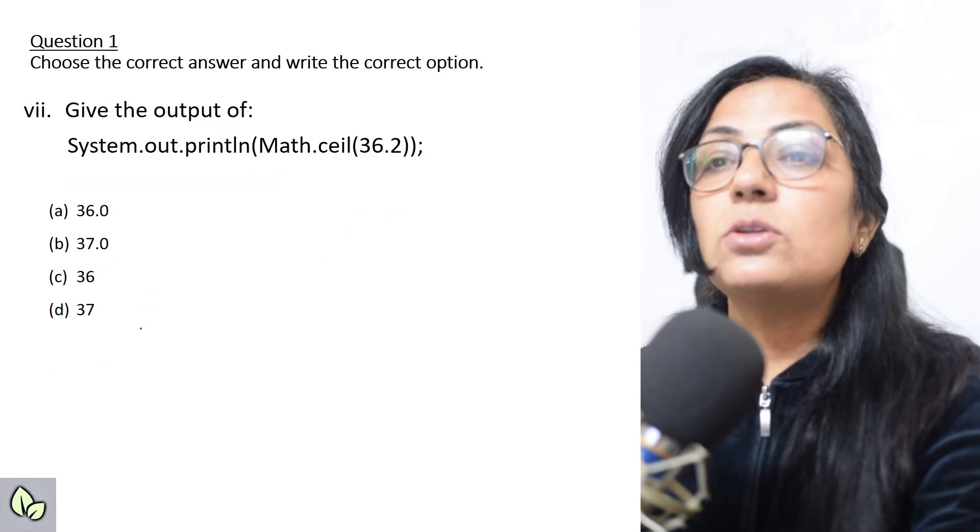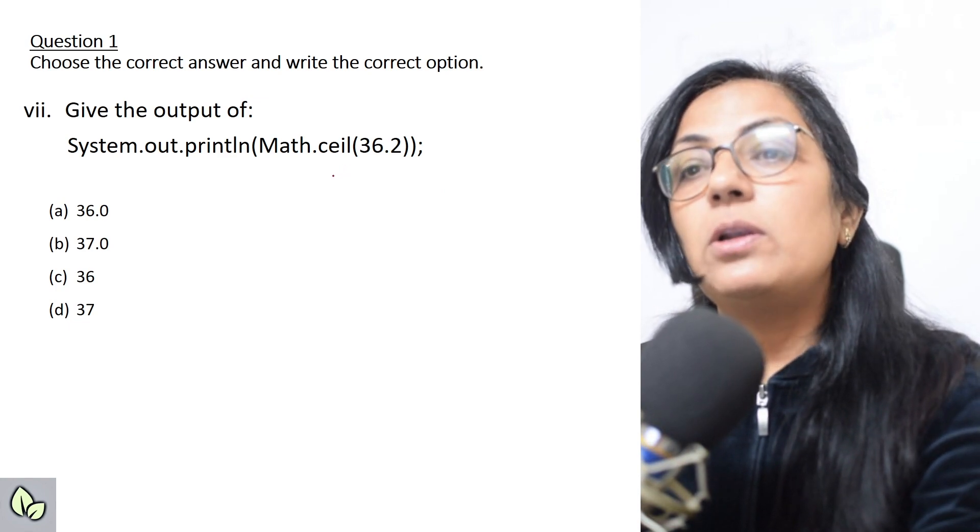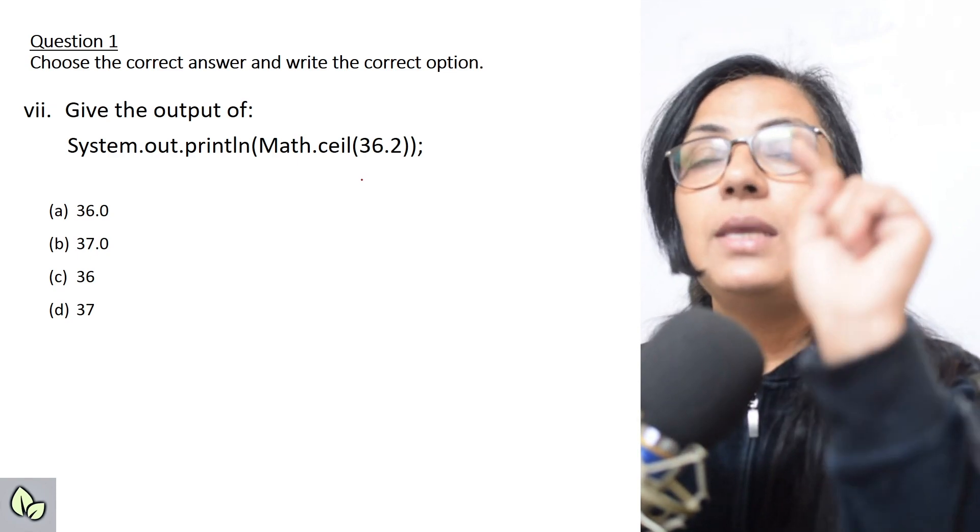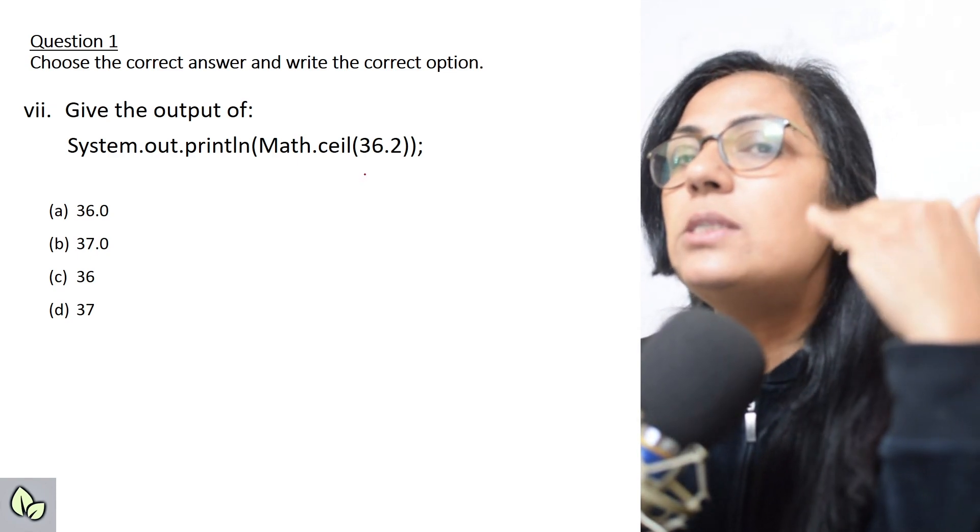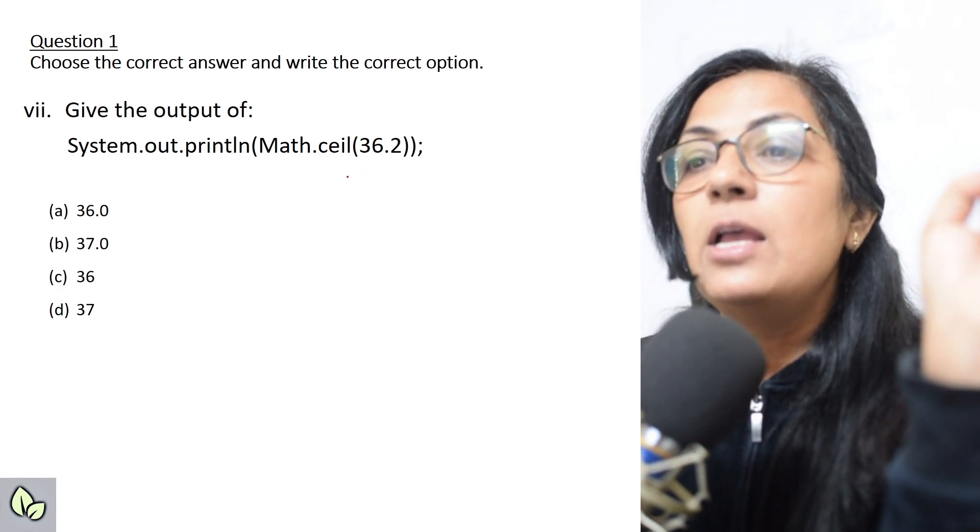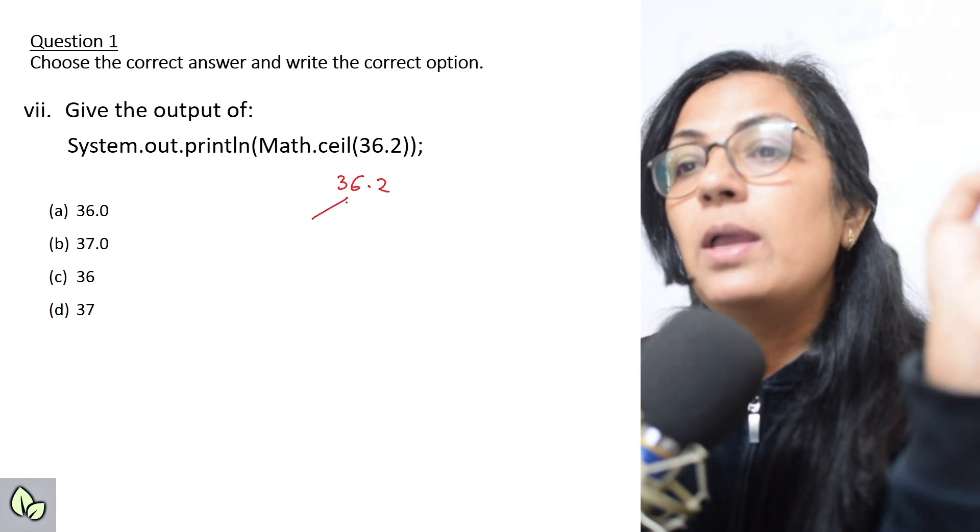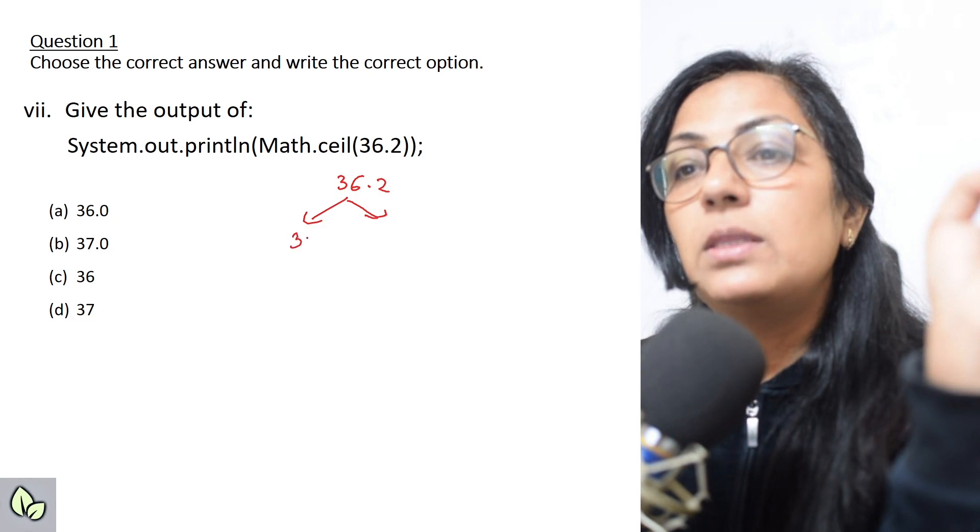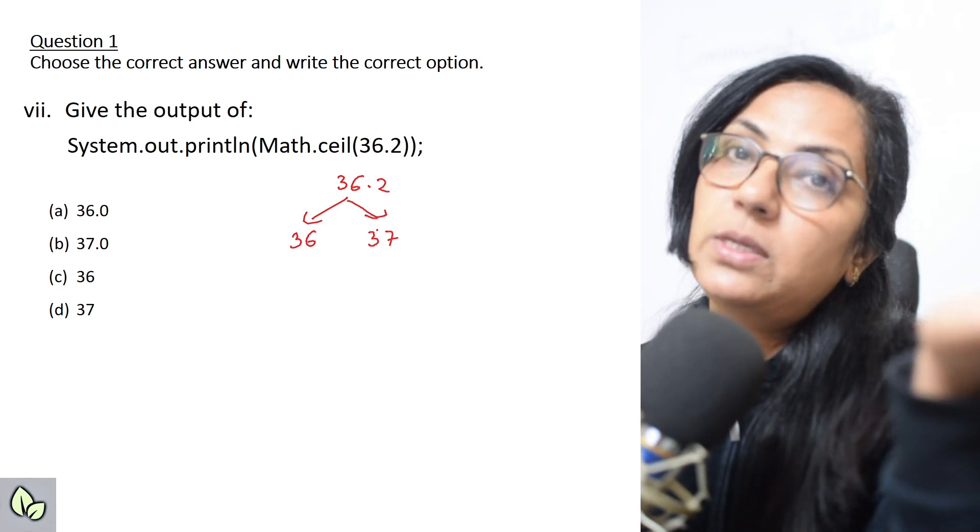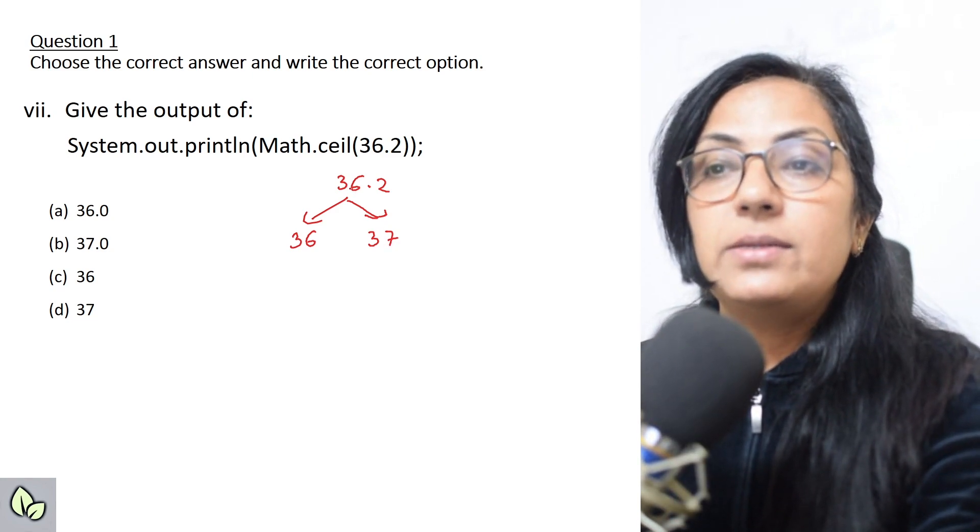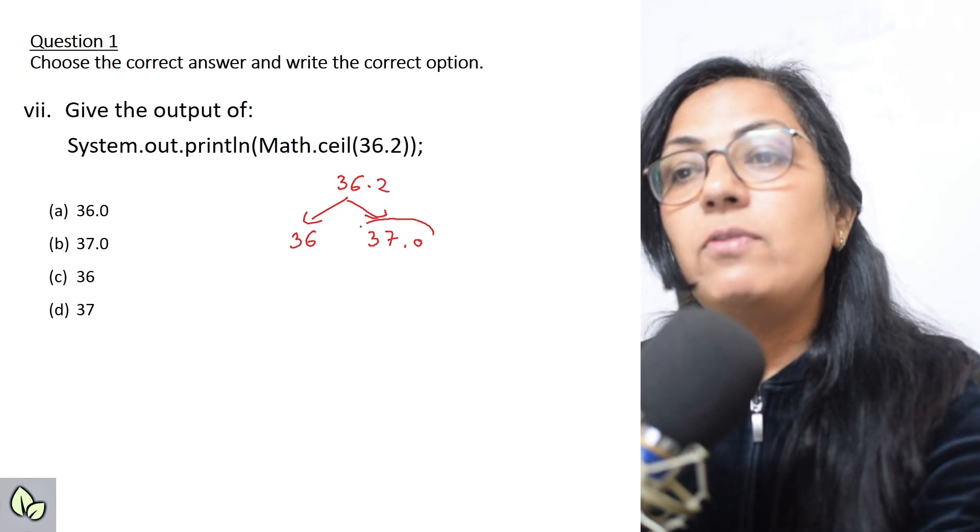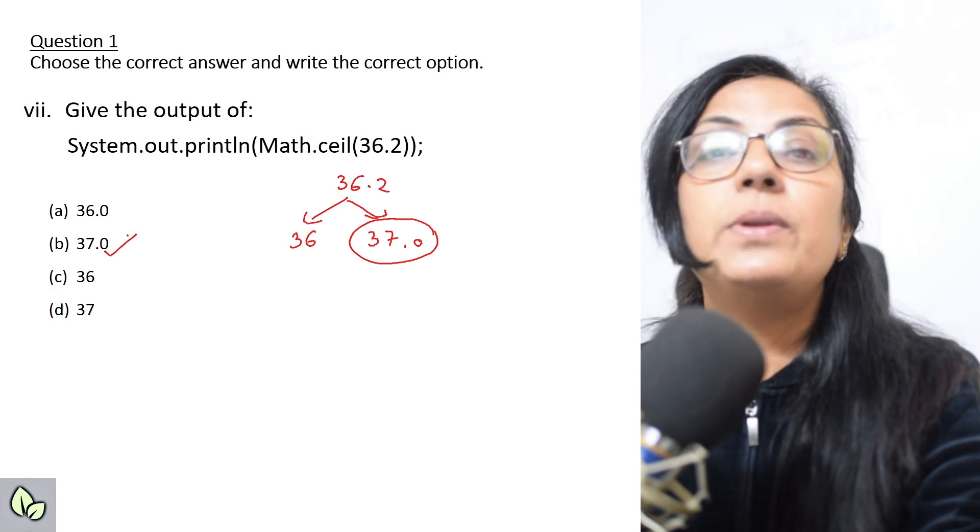The next question: give the output of system.out.println math.ceil 36.2. Ceil means ceiling, ceiling fan se pata hai na. Ceil means usse just upar wala jo integer hai, lekin answer double type mein aayega. So if you see 36.2, iske aas paas ke do integers kaunse honge? 36 hoga aur 37 hoga. So ceil mein kya aayega? Usse just aage wala, that is 37, and since the result of ceil function is always in double type, the answer will be 37.0.